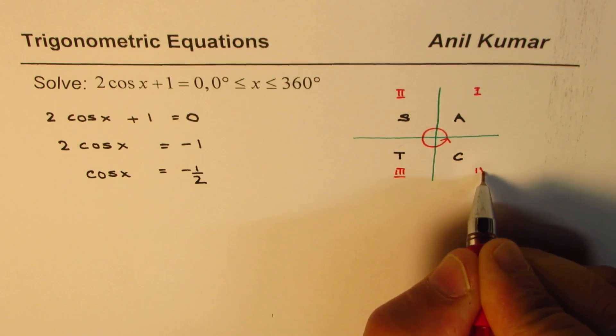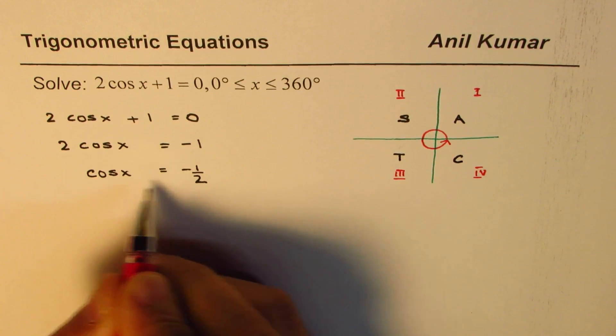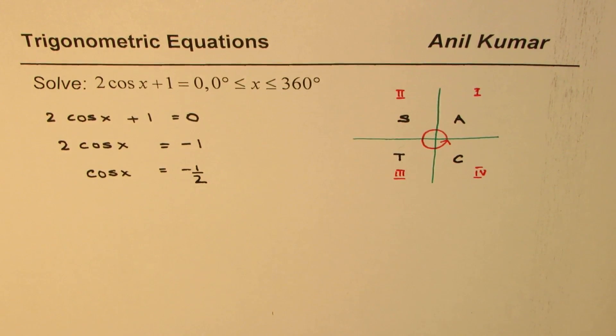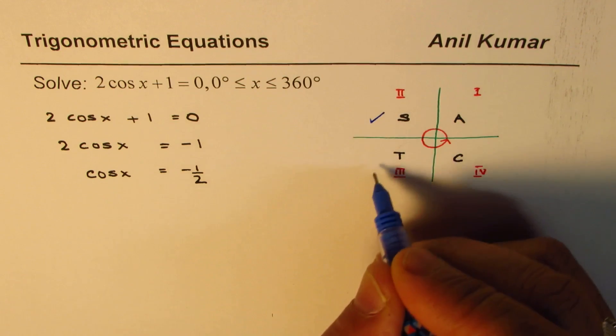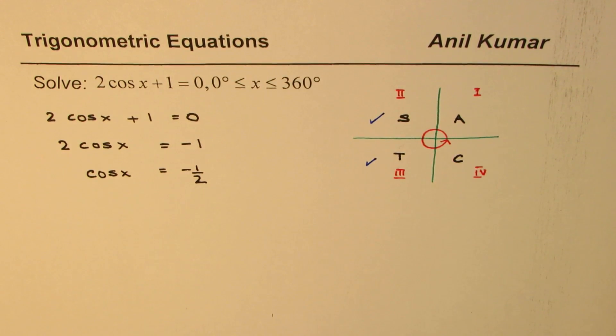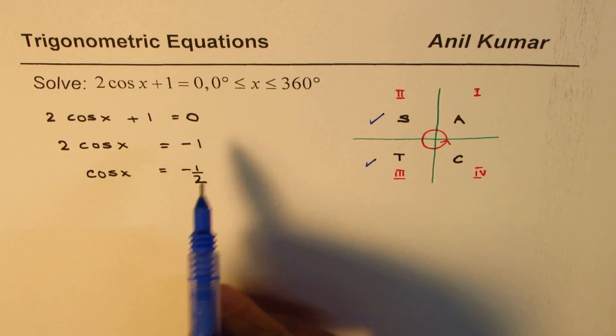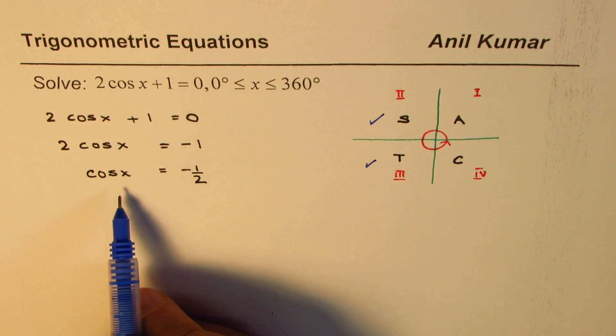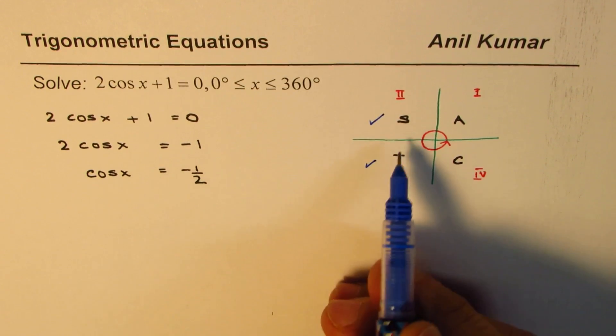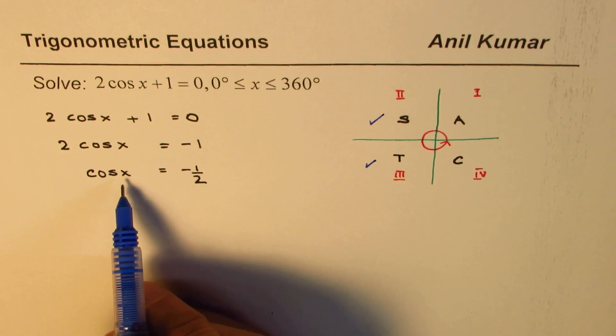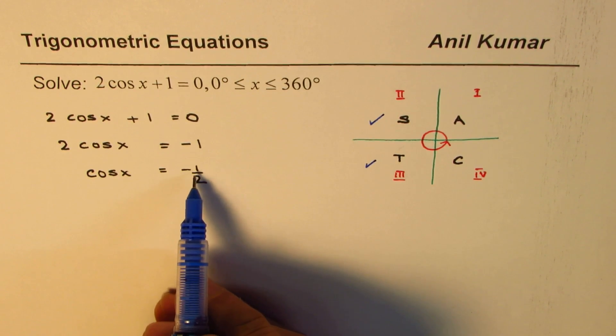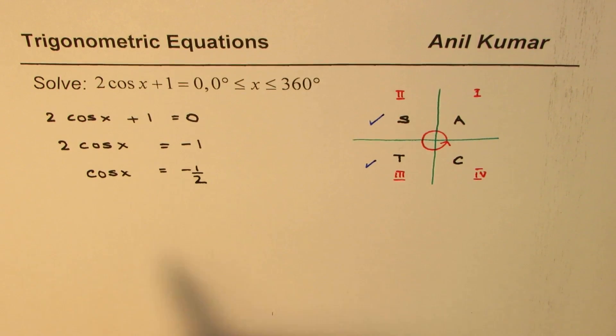Now we need to find cos of negative half. That means we are looking into two quadrants in which cos is negative and these are quadrant 2 and quadrant 3. So we are expecting two solutions for this equation. One will lie in quadrant 2, the other one in quadrant 3. Now what value of x will give us half?